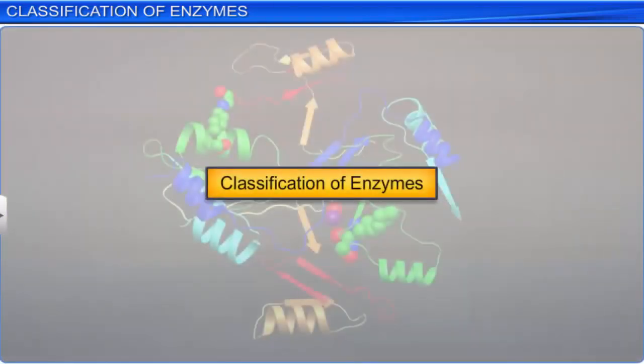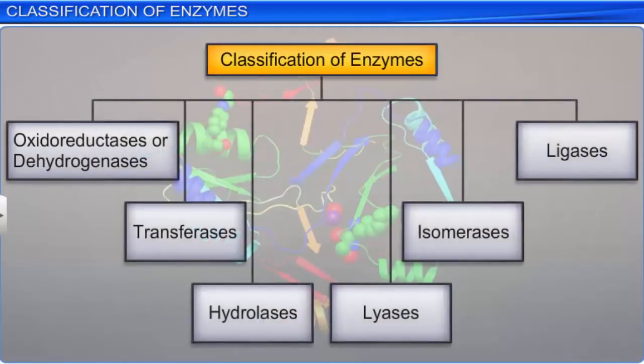Scientists have discovered and studied numerous enzymes. Depending on the types of reactions they catalyze, enzymes have been divided into six classes, namely oxidoreductases or dehydrogenases, transferases, hydrolases, lyases, isomerases and ligases.